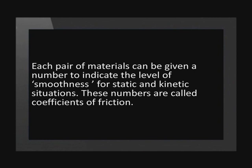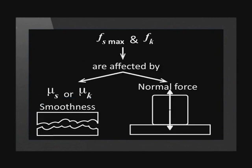How do we calculate each of these factors so that we can calculate how strong FS max and FK are? Each pair of materials can be given a number to indicate the level of smoothness for static and kinetic situations. These numbers are called coefficients of friction. The symbol for coefficient of friction is the Greek letter mu. The coefficient of static friction is mu s. The coefficient of kinetic friction is mu k.